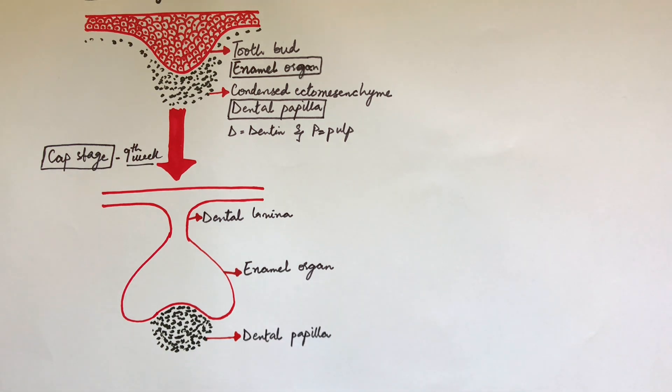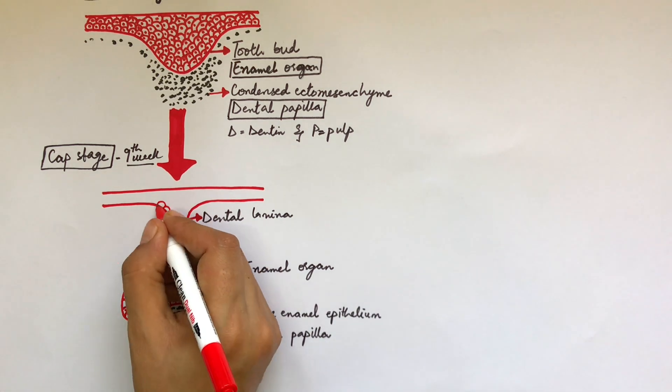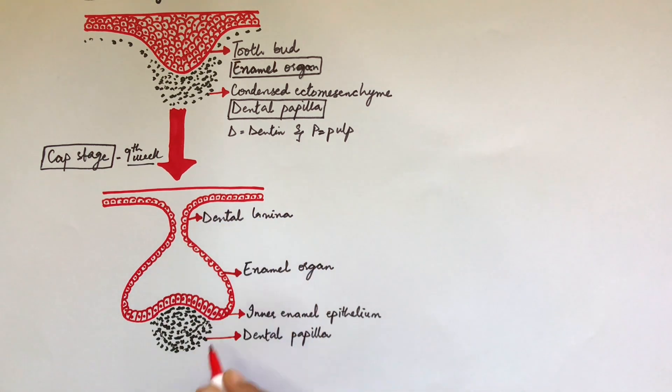The cells lying at the concave region of the cap-shaped enamel organ become short columnar and are now called the inner enamel epithelium. While cells lying at the convex region become short cuboidal and are now called the outer enamel epithelium.